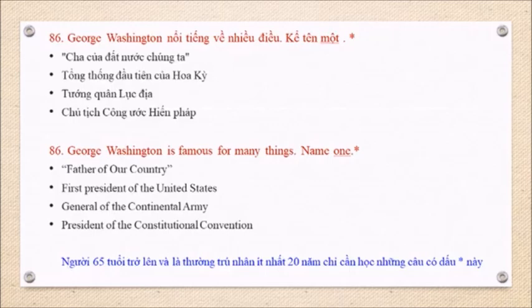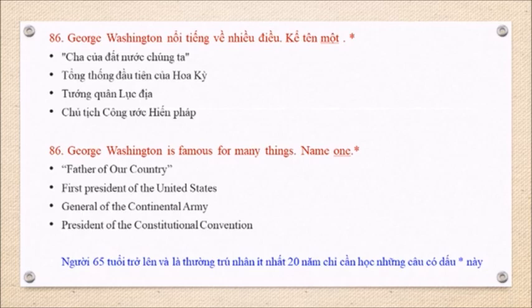Question 86: George Washington is famous for many things. Name one. Father of our country. First President of the United States. General of the Continental Army. President of the Constitutional Convention.